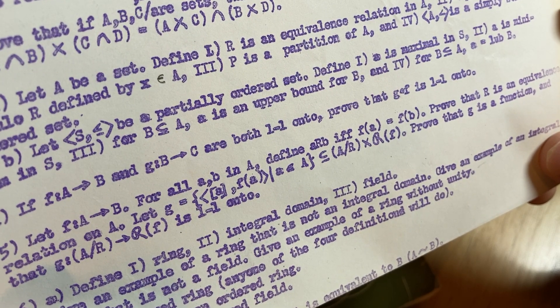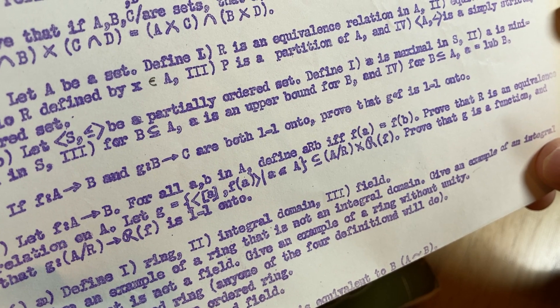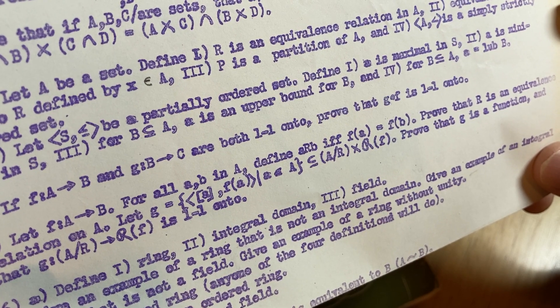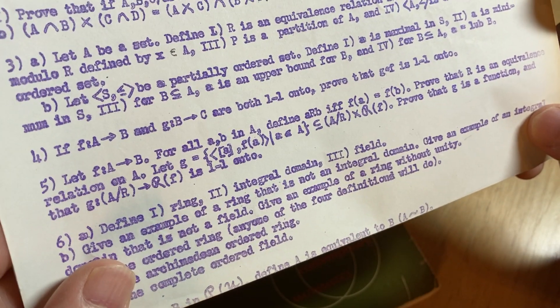Number four, if F and B are one-to-one onto, prove that the composition is one-to-one onto. That's a pretty easy proof. It's a good problem.